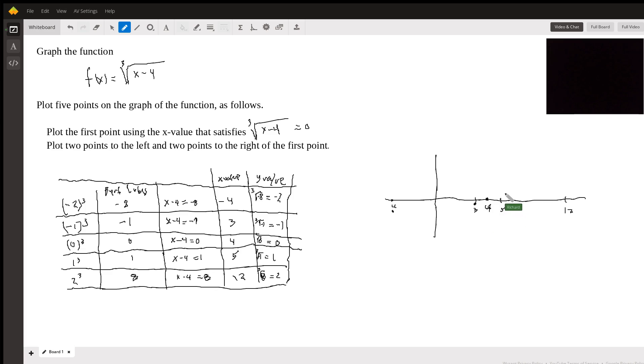5 is going to give us a positive 1. So it will be here. 12 is going to give us a positive 2. So approximately like that.